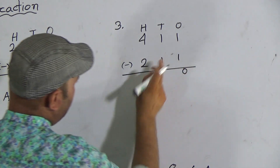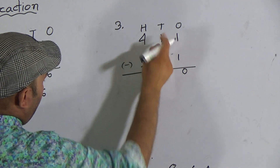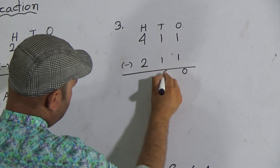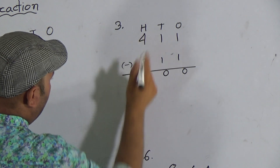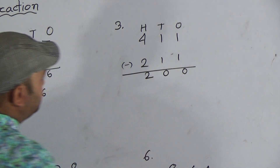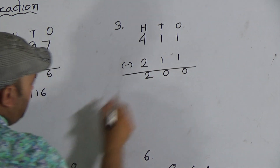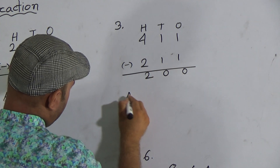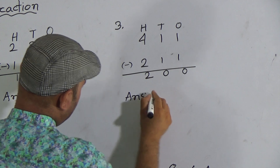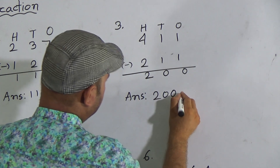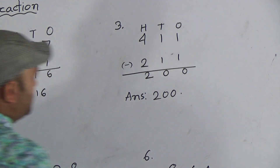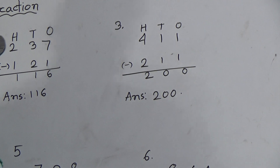Again one from one it will be zero, and the last column is two from four, it will be two. So the answer is two hundred. My students, hope you understood this one. Now look here, here is question number four.